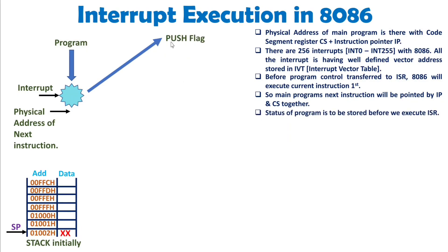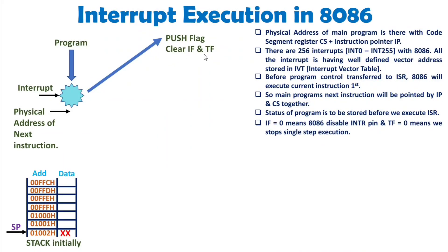First, 8086 executes a push flag operation automatically — we as programmers do not write this instruction. This loads the flag status onto the stack. After that, 8086 clears the interrupt flag (IF) and the trap flag (TF). Clearing IF disables the INTR pin so that no new interrupt can interrupt the current service. Clearing TF ensures the interrupt service routine is not executed in single-step mode but runs in one go.